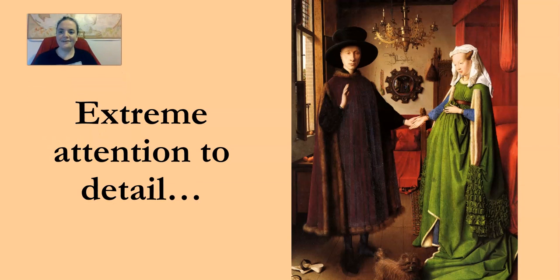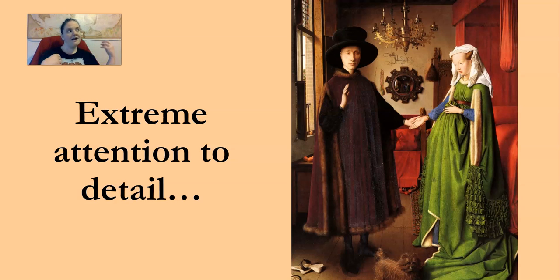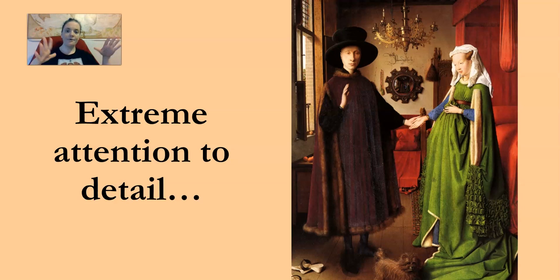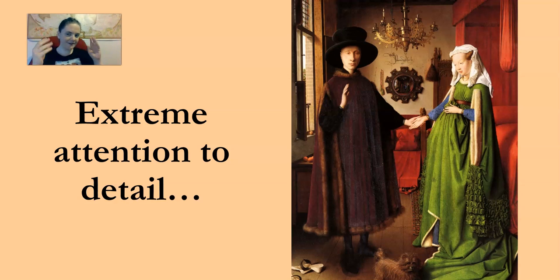Another method used in the Renaissance, in particular in the Northern Renaissance, is an extreme attention to detail. Differently than the Southern Renaissance, which had light and airy scenes with very idealized people, the Northern Renaissance instead really finds its way into the small details of its subject matter.